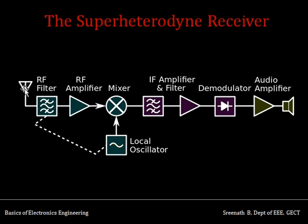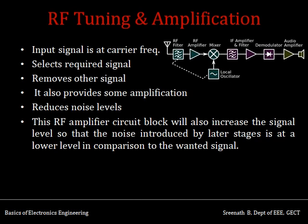An antenna receives the carrier signal and generates voltage signals corresponding to the received signal. That voltage signal is sent to the RF stage where tuning and amplification occur. Tuning in communication basically means to selectively remove some frequencies and choose others. In the RF stage, required signals are selected and others are removed.